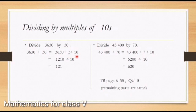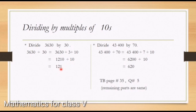The second part of question five: divide 43,400 by 70. We write it in the division form and split 70 into 7 and 10. So we have 43,400 divided by 7, divided by 10. First we divide 43,400 by 7, which gives 6,200. Then we divide by 10, removing one zero from the right, and it becomes 620.